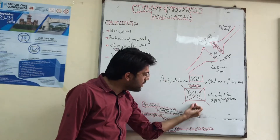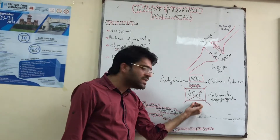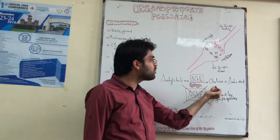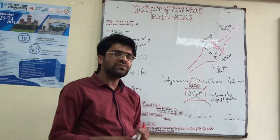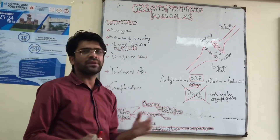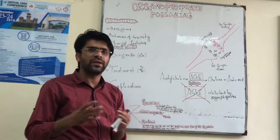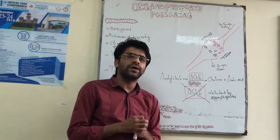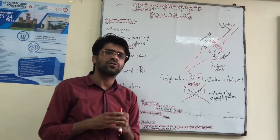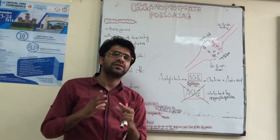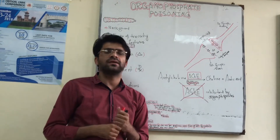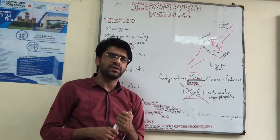Organophosphates combine with Acetylcholinesterase, making it no longer functional to hydrolyze Acetylcholine into choline and acetic acid. So Organophosphates actually inhibit the Acetylcholinesterase enzyme, resulting in over-accumulation of Acetylcholine at the synaptic level as well as at the Acetylcholine receptors.